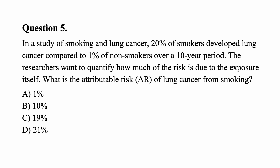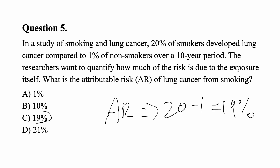Question five: In a study of smoking and lung cancer, 20% of smokers developed lung cancer compared to 1% of non-smokers over 10 years. What is the attributable risk of lung cancer from smoking? Attributable risk is calculated by subtracting the risk between the two groups: 20% minus 1% equals 19%. The answer is C.